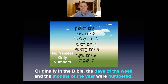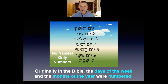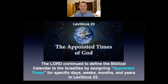In Hebrew, the days are called Yom Rishon, Yom Shani — the first day, the second day. These are actually a purer way to understand the days of the week and the months of the year. As we see in the Gregorian calendar, it's filled with a lot of pagan names.